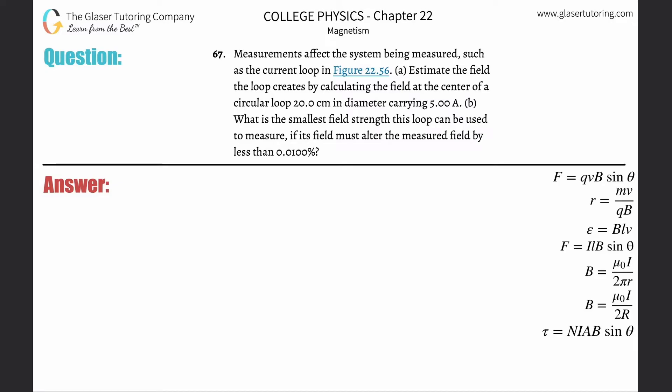Number 67. Measurements affect the system being measured such as the current loop in figure 22.56 letter A. Estimate the field, the magnetic field that is, the loop creates by calculating the field at the center of a circular loop 20 centimeters in diameter carrying 5 amps of current.